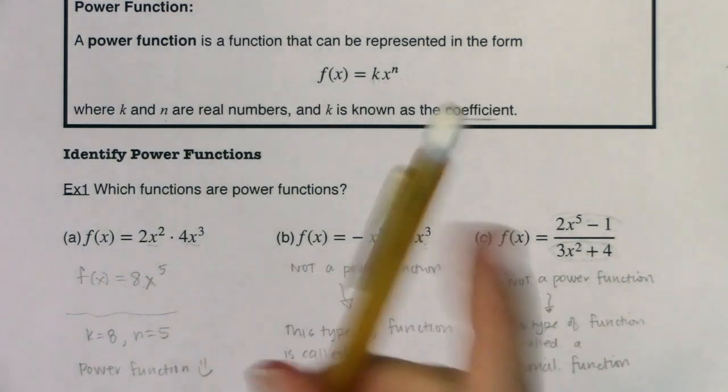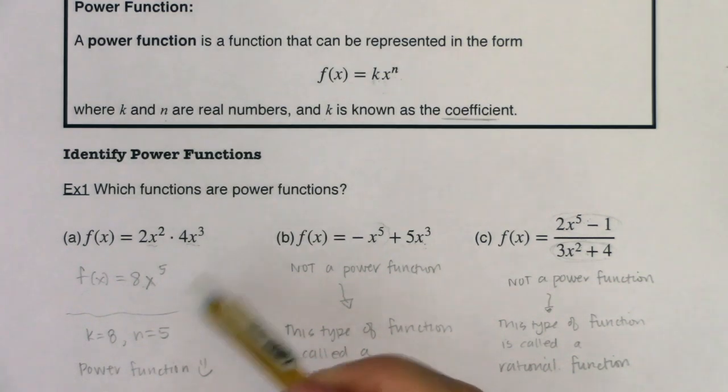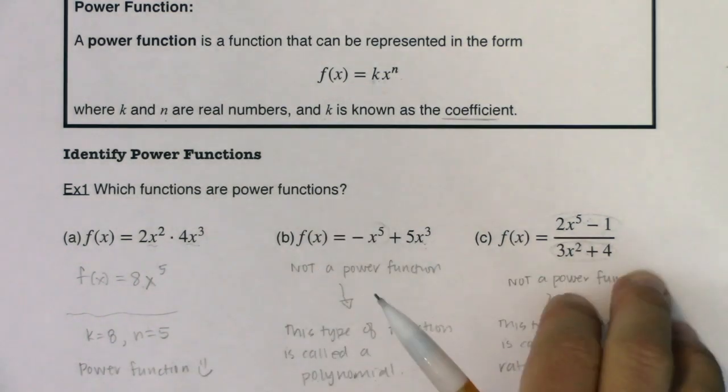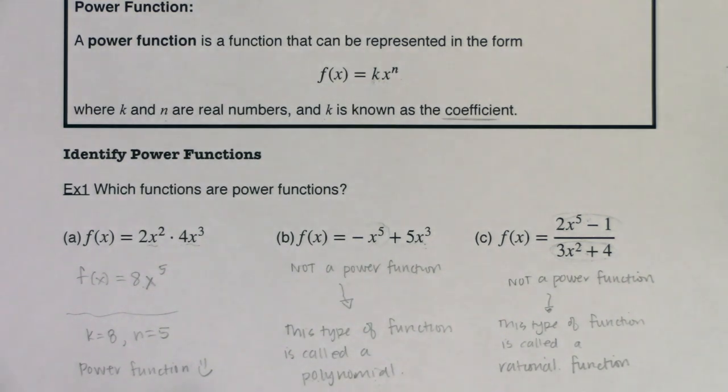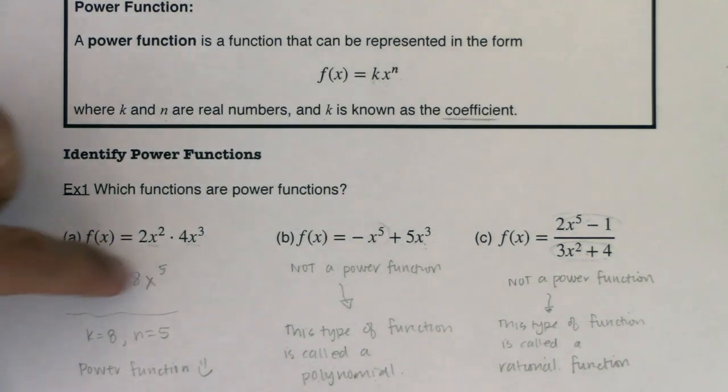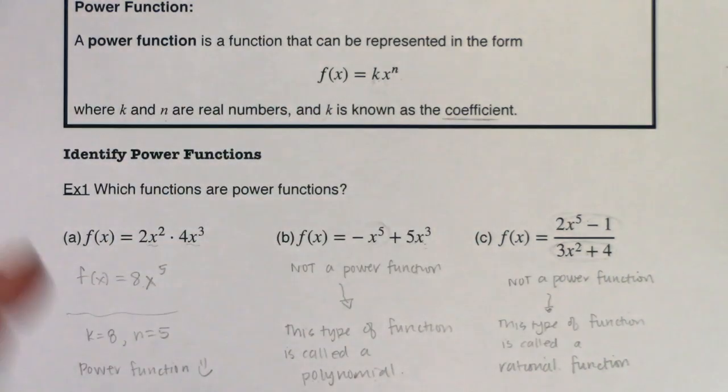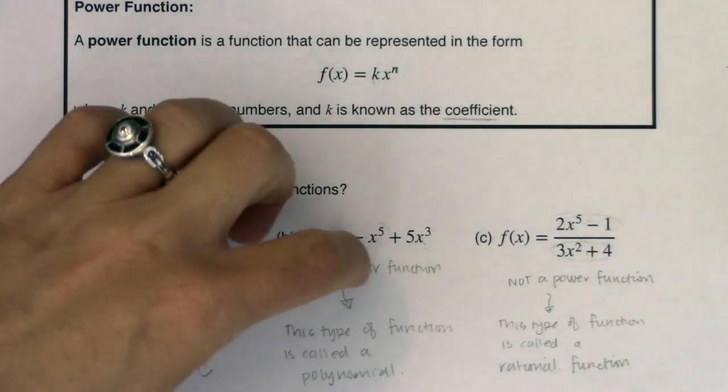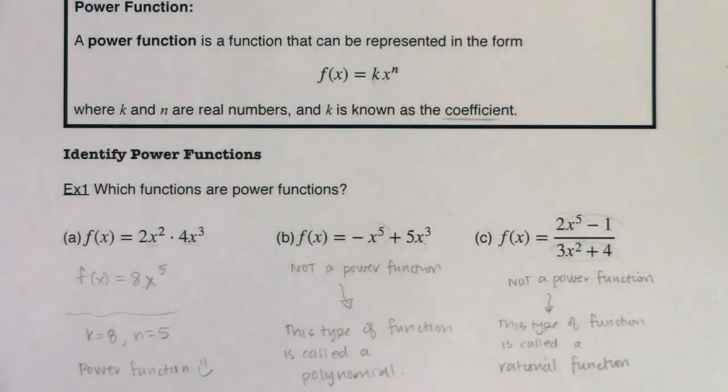So this one in part a is the only power function in and of itself - polynomial, rational. And as we progress through this chapter, by the end of this chapter, you should be able to sketch each of these functions with a whole bunch of traits like domain, range, x intercept, y intercept, end behavior, things like that. That is the goal of this chapter. Can you graph these functions that are beyond your toolkit functions?